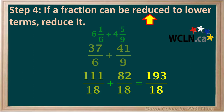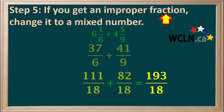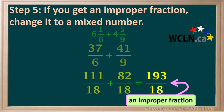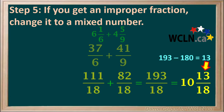For step 4, we check if our fraction can be reduced to lower terms. There are no whole numbers that divide into both 193 and 18, so this fraction cannot be reduced. Step 5 requires us to change the improper fraction to a mixed number. 18 goes into 193 ten times, since 18 times 10 is 180, and the remainder is 193 minus 180, which is 13. Our final answer is the mixed number 10 and 13 eighteenths.